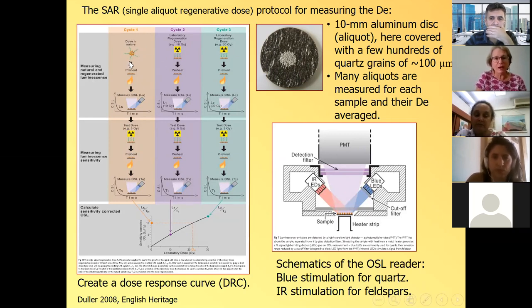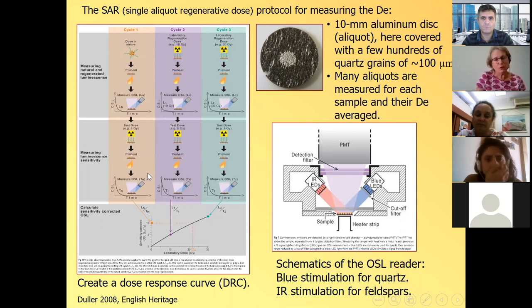And this creates the signal. And here we have filters which prevent the light from the stimulation from the blue LED or red LED, IR LED from entering the photomultiplier. So only the light emitted by the quartz grains is measured. So this is a single aliquot. And what's a regenerative dose protocol? It is shown here. So we take this natural aliquot, a sample that has not been exposed to sunlight, and we preheat it.